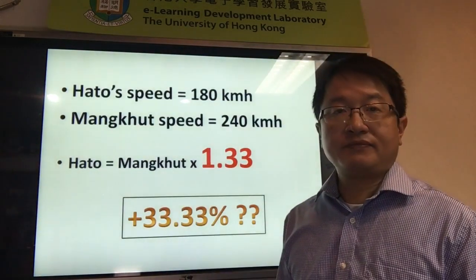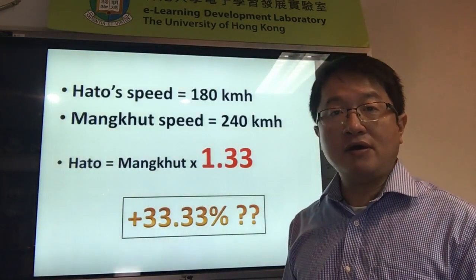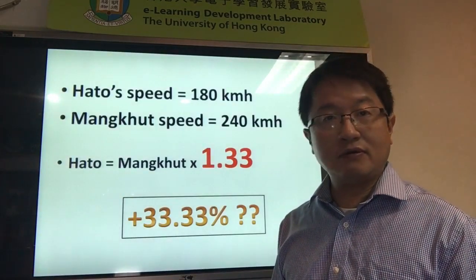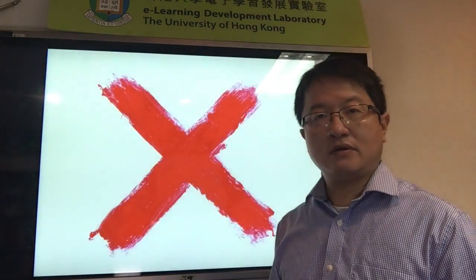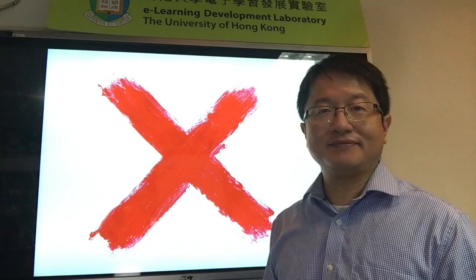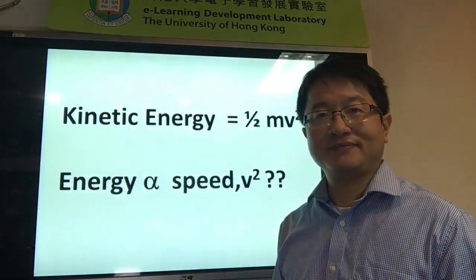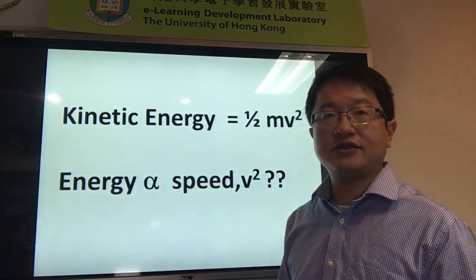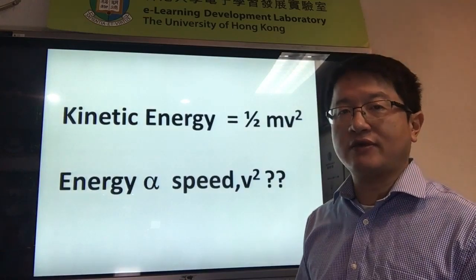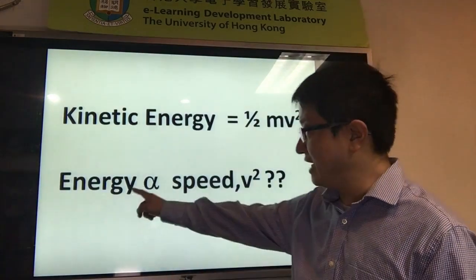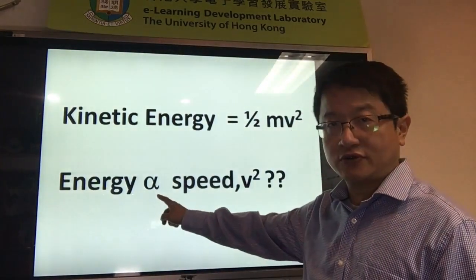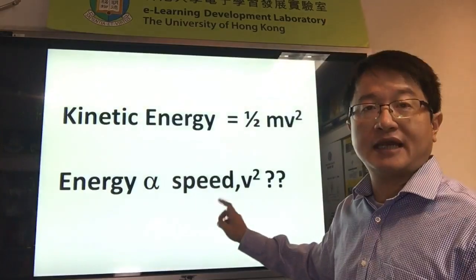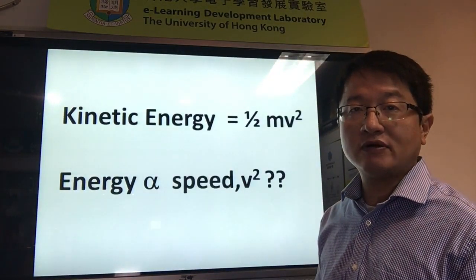Does it mean that the power is also 33% more? Of course, it's not that simple. According to the equation of kinetic energy equals half mv squared, the energy is proportional to the square of speed. So it should be at least 66% more.